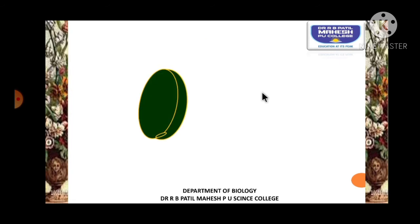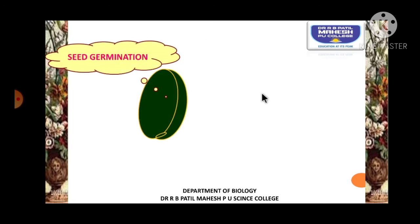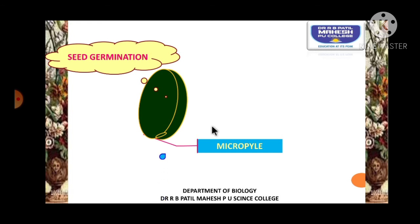Let us understand the advantage of the micropyle. During seed germination, the micropyle — which is not covered with integuments — plays a major role: water can enter easily and helps in the process of seed germination. This allows us to see the development of the radicle.